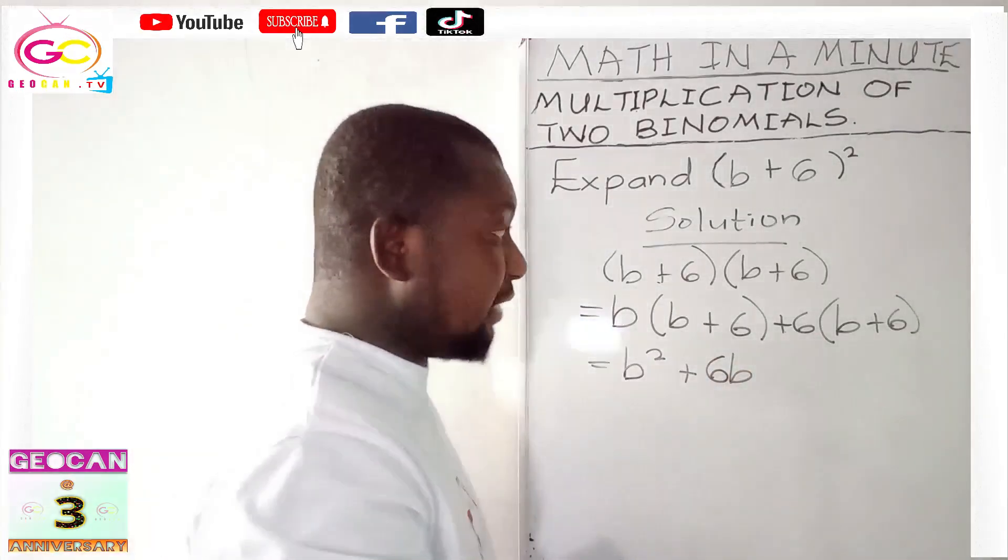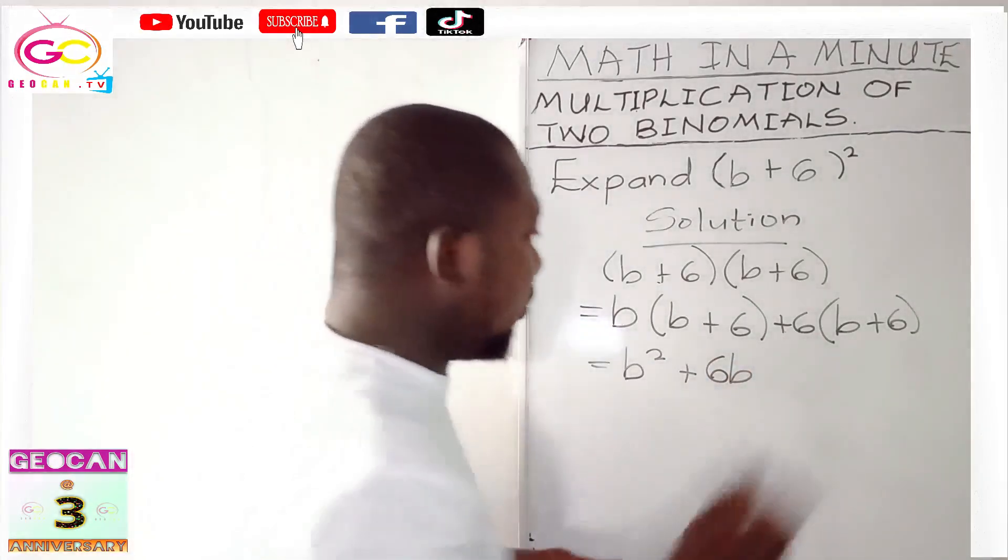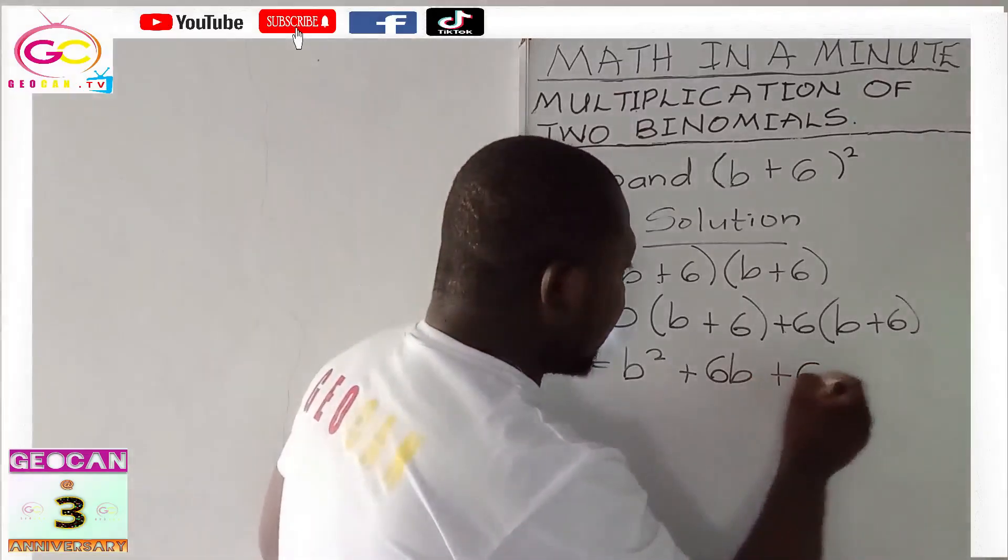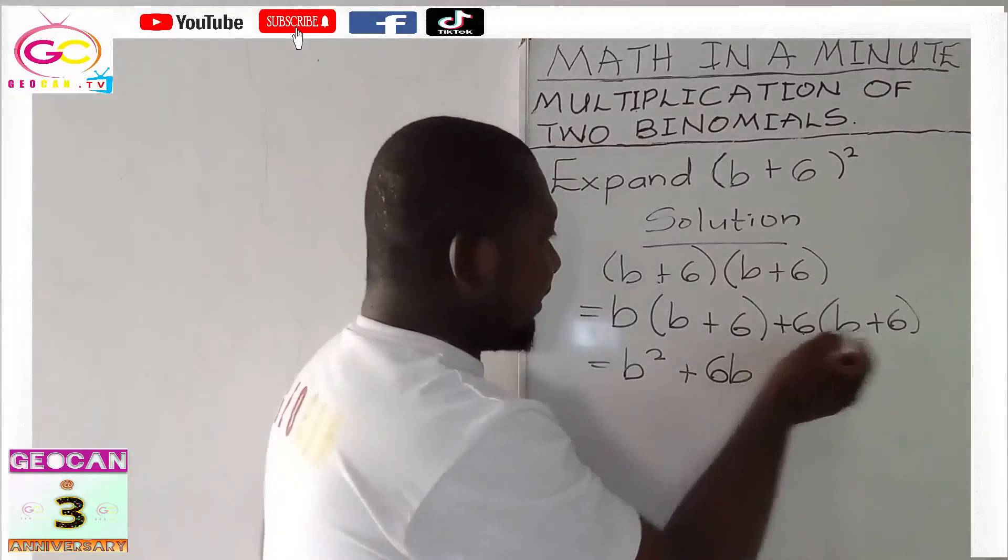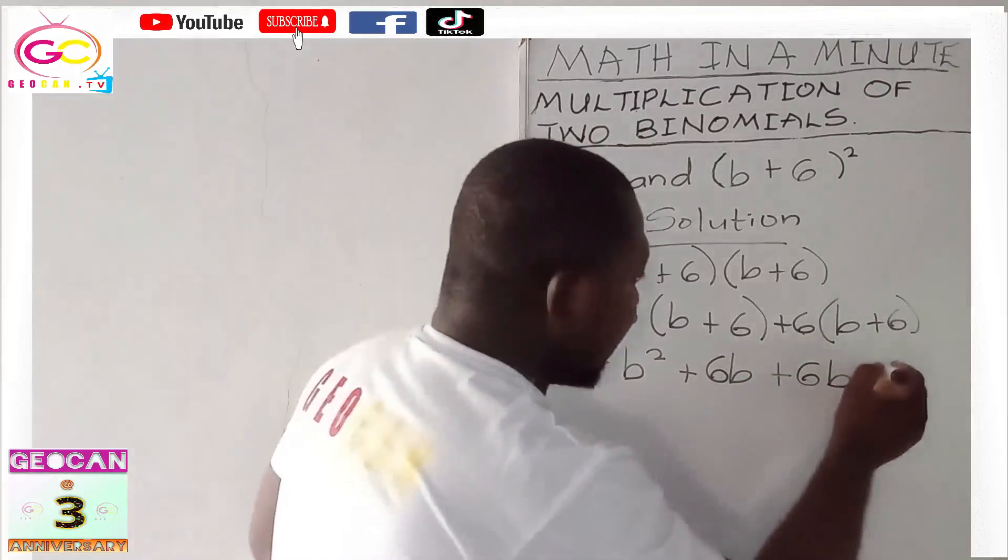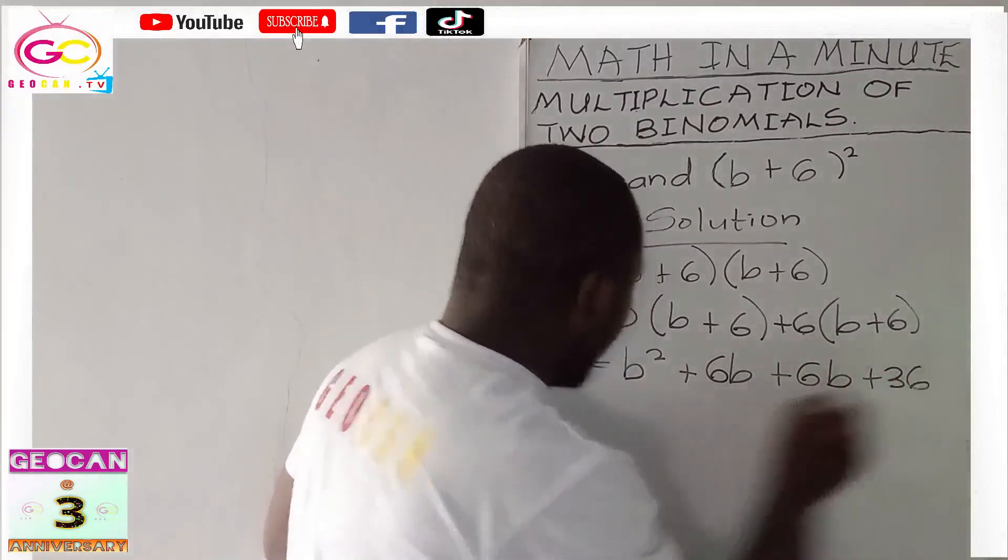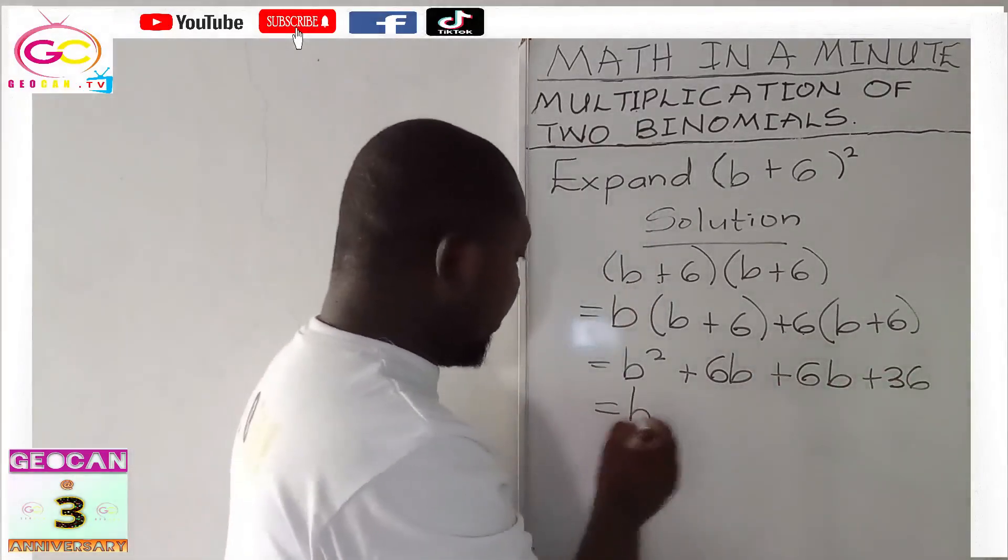Now, positive 6 times b, it doesn't matter, it will also give us 6b. b times 6, 6 times b is the same result, so plus 6b. Now, 6 times 6 is positive, so 36. Now, let's continue. We have b².